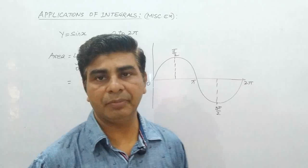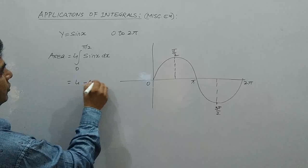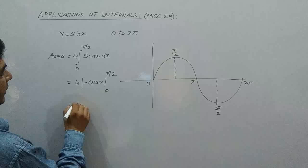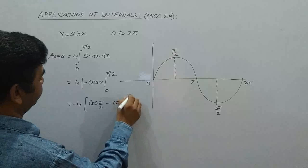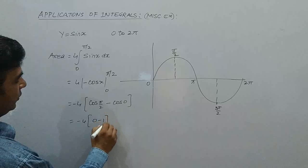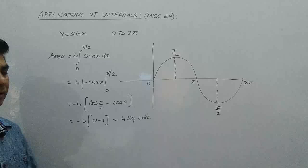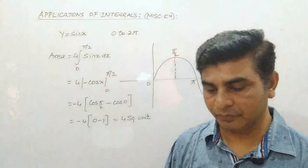This gives minus cos x evaluated from 0 to π/2, which is minus 4 times cos(π/2) minus cos(0), equal to minus 4 times 0 minus 1, giving an answer of 4 square units. So the area bounded by sin x from 0 to 2π is 4 square units. This was question number 5.